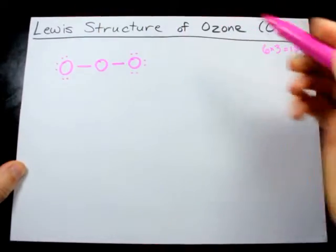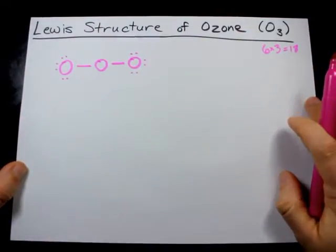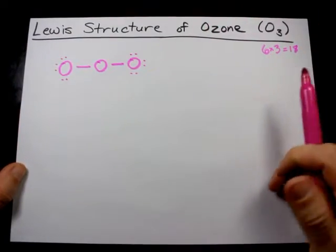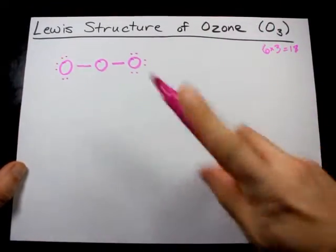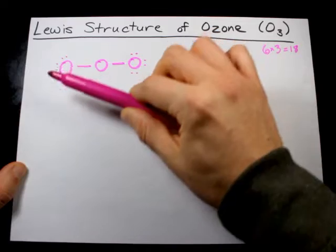There we go, each of the outer oxygens now has eight electrons, that is a complete octet. Octet rule. But I've still only used 16 electrons total.